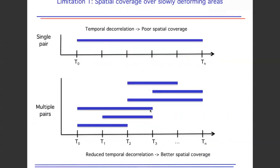One limitation that comes out naturally is: if you're trying to monitor slowly deforming areas, you need to wait long enough for the deformation signal to build up, but as you wait, you'll get poor spatial coverage. One way of mitigating this could be combining multiple short temporal baseline interferograms, where you have better spatial coverage in each, and trying to combine information to improve your overall spatial coverage while monitoring a slowly deforming region.